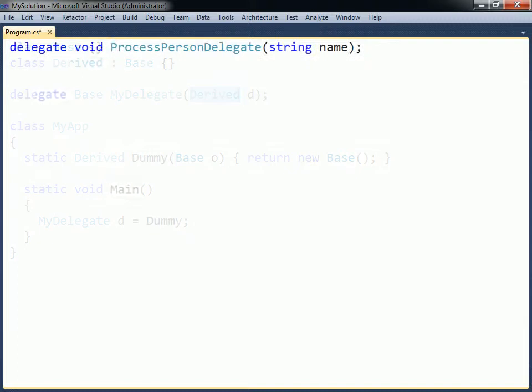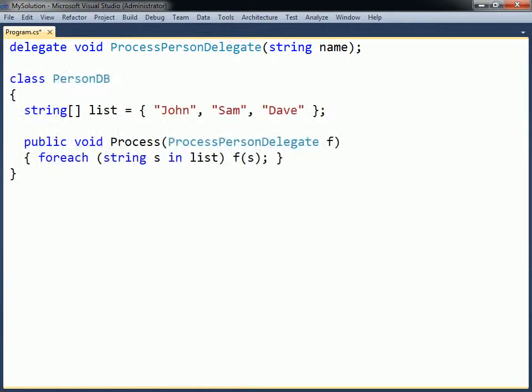An important property of delegates is that they can be passed as method parameters. To demonstrate the benefit of this, two simple classes will be defined.